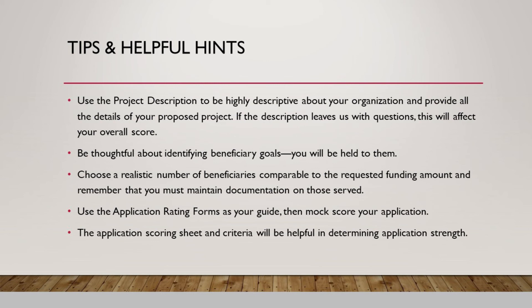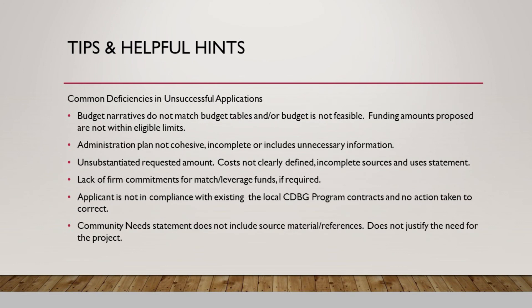Use the project description to be highly descriptive about your organization and provide all the details of your proposed project. If the description leaves us with questions, this could and will affect your overall score. Be thoughtful about identifying beneficiary goals — you will be held to them. Choose a realistic number of beneficiaries comparable to the requested funding amount, and remember that you must maintain documentation on those that you serve. Use the application rating forms as your guide, then mock score your application. The application scoring sheet and criteria will be helpful in determining the strength of your application. Common deficiencies in unsuccessful applications include incorrect budget narratives, non-cohesive administration plans, or a community needs statement that does not include source material or references.